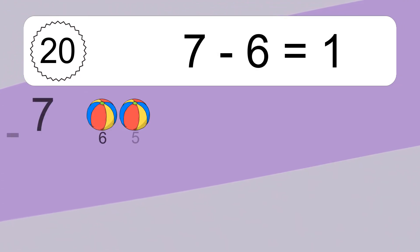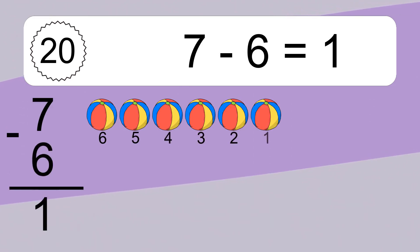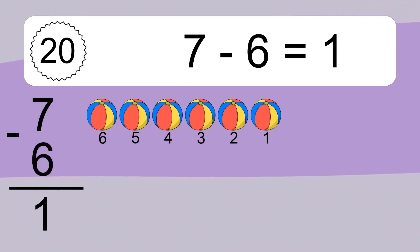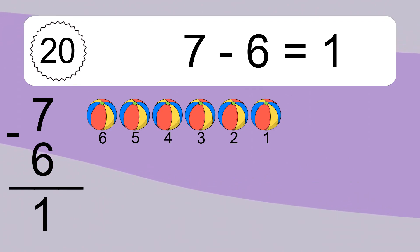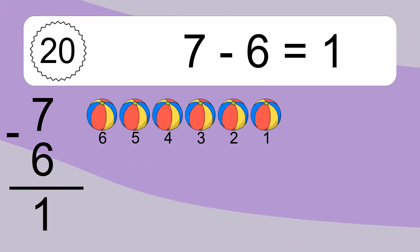7 minus 6 equals what? 7 minus 6 equals 1. Let's count it: 6, 5, 4, 3, 2, 1.